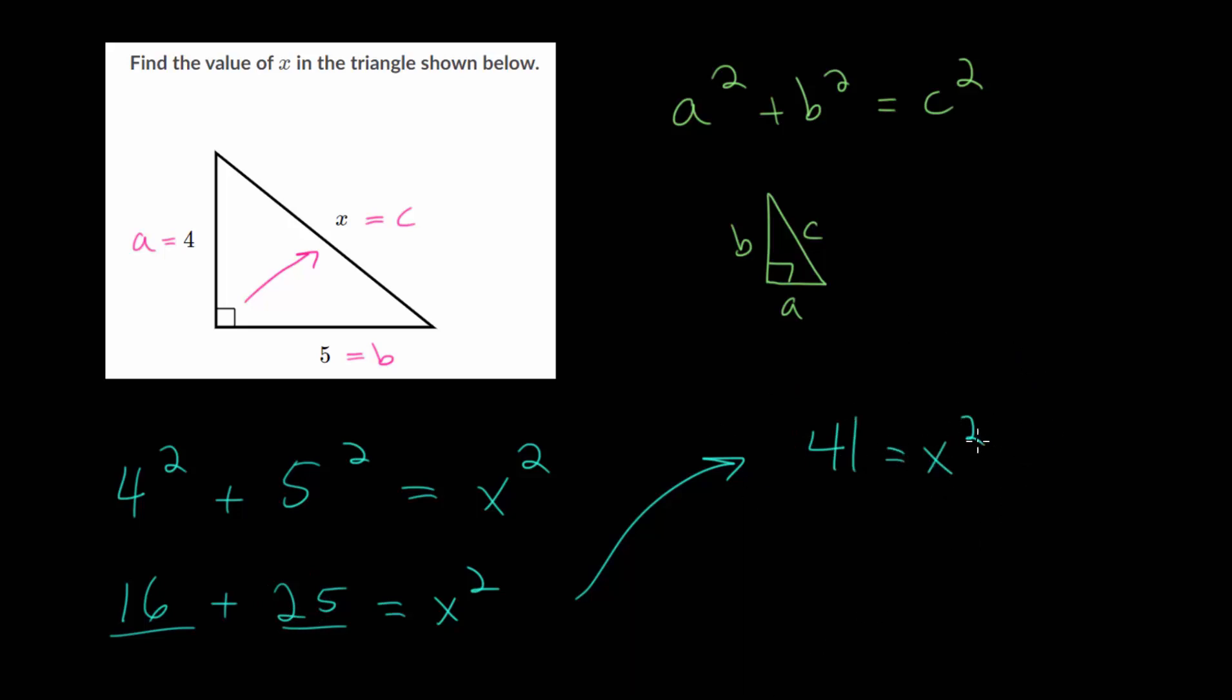Now remember at this point, we need to essentially cancel out this square, and the way to do that is to take a square root of each side of the equation. Since squaring and taking square roots, those are inverse operations, they cancel each other out.